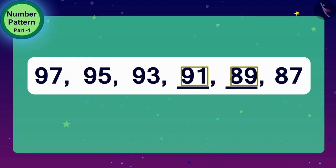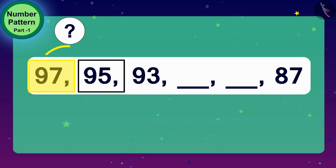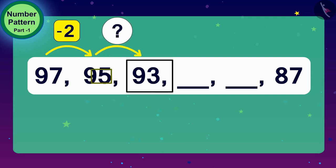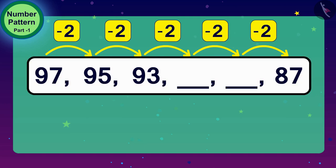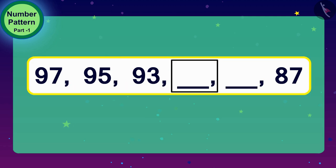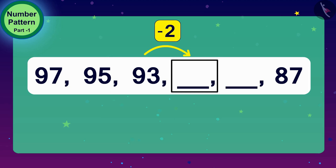Well done, children, you have got the right answer. What do we have to do to get 95 from 97 here? Yes, we have to subtract 2 from 97. And what to do to get 93 from 95? Exactly, once again, subtract 2. So, to get the next number in this number pattern, we need to subtract 2 from the number before it. Here is the rule of this number pattern. The next number will be 2 less than 93. And what will be its next number? 2 less than 91. In this way, our pattern is completed.